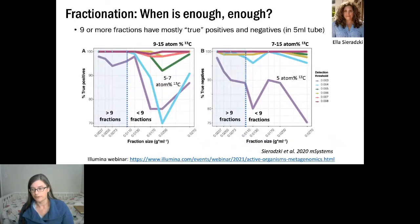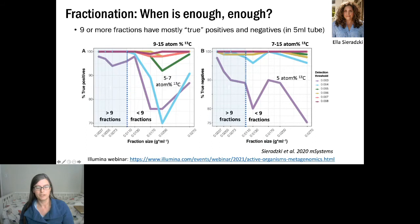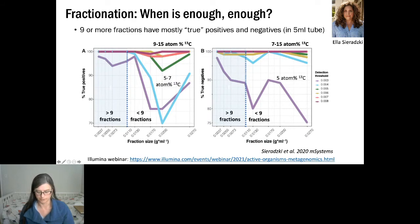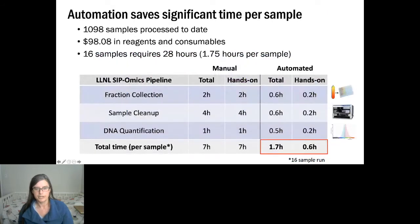A final consideration is how many fractions to sequence. Based on Ella's paper — with an Illumina webinar available for more detail — about nine fractions from a 5 mL tube is a good sweet spot. Plotting true positives and true negatives against fraction size shows that for most atom percent enrichments, nine or more fractions keeps you in the correct classification realm. At lower enrichments or fewer fractions like three, accuracy drops off significantly.